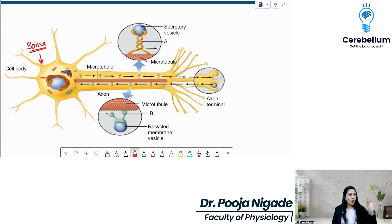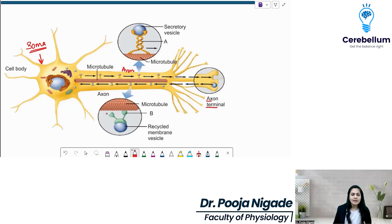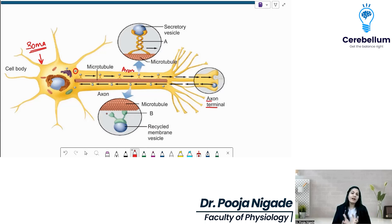Then we have the long process attached with the soma — we call it the axon. And at the end of the axon, we have the axon terminals. The axon terminal has the important property of exocytosis. Vesicles are basically storage bodies — like a piggy bank in which you store money. These vesicles are going to store whatever is produced by the soma.